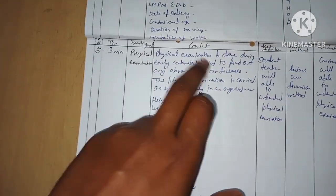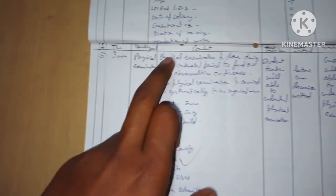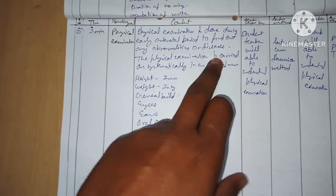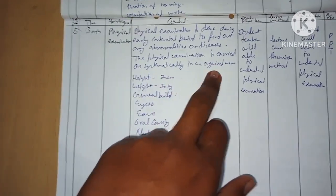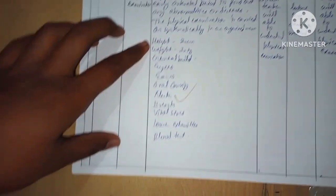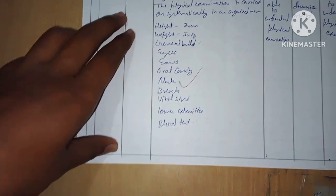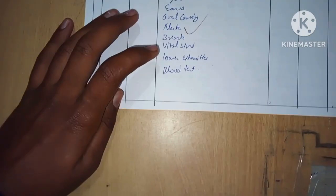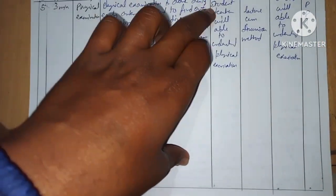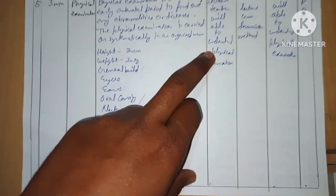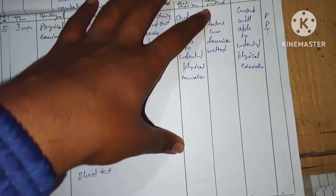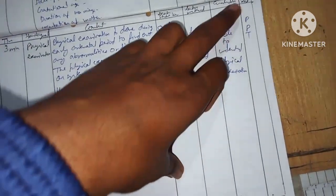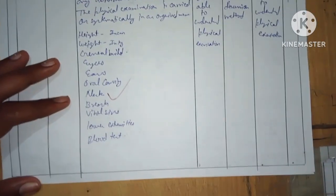Fifth point — time: three minutes. Specific objective: physical examination. Content: physical examination is done during the early antenatal period to find out any abnormality or disease. The examination is carried out systematically in an organized manner — height, weight in kg, general appearance, beard, eyes, ears, oral cavity, neck, breast, vital signs, lower extremities, and blood tests. Method: lecture cum discussion. Evaluation: group will be able to understand physical examination. AV aids: PPT.